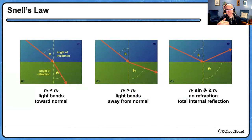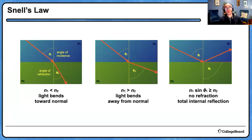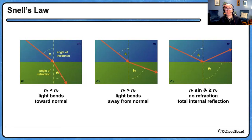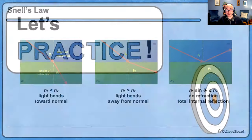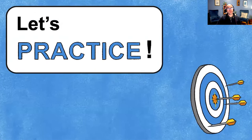Refraction is the bending of light because of its change in speed when it changes media. If N1 is less than N2, light bends toward the normal when it changes media. If N1 is greater than N2, light bends away from the normal. And at a certain incident angle, if N1 is greater than N2, there exists an angle such that the light will not refract into the second medium — it will instead reflect. That's a lot of content, but today we're here to practice.